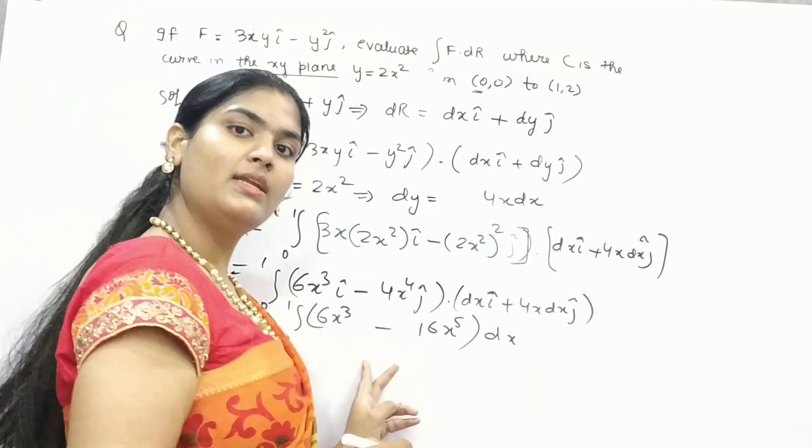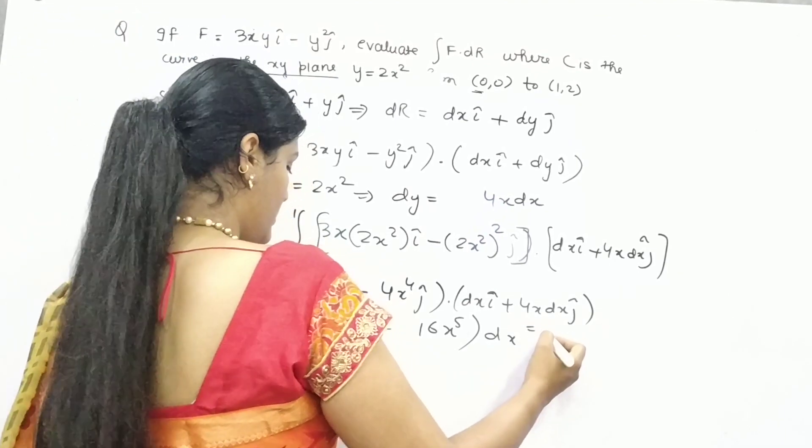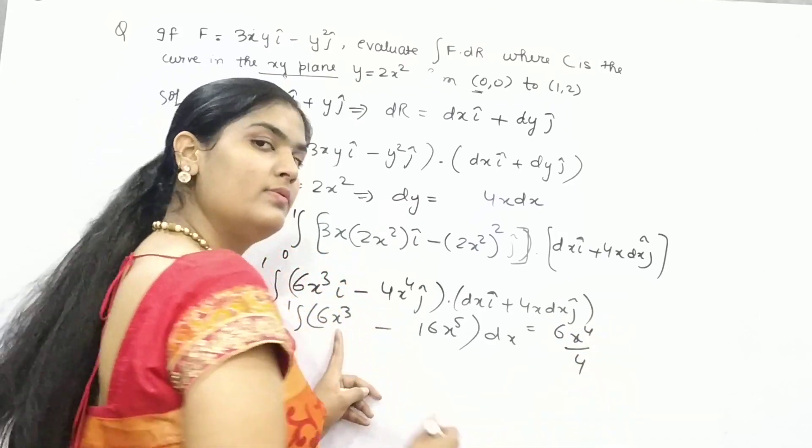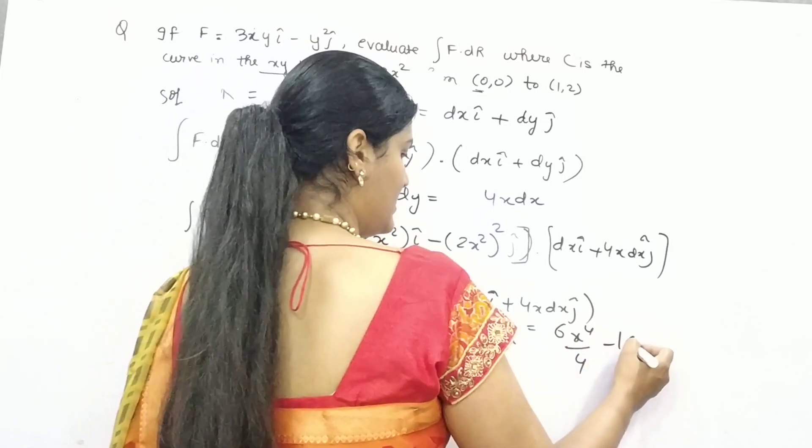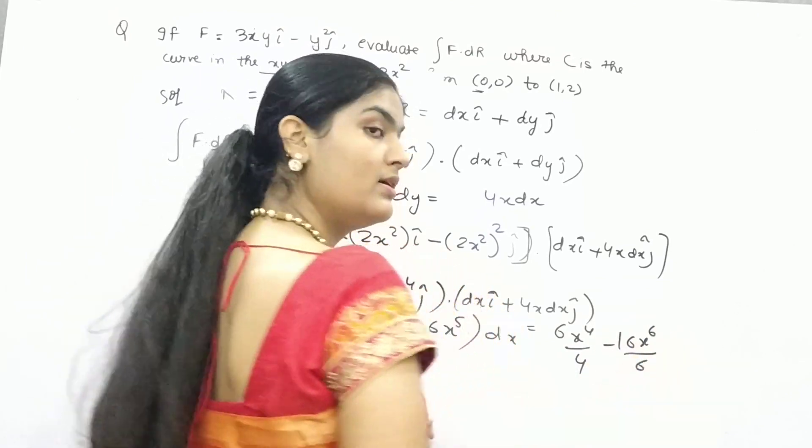You know how to integrate it? 6x to power 4 by 4, add 1 and divide it by 1. Minus 16x to power 6 by 6. Correct?